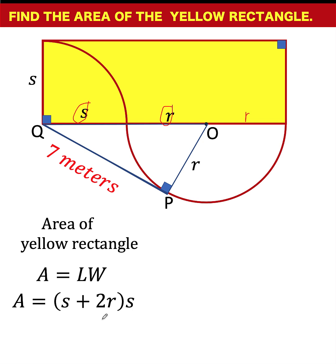Distributing the binomial factor to this binomial, we arrive at A equals s squared plus 2rs. We are going to go back to this equation later on.